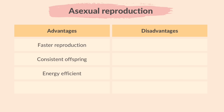Energy efficient — asexual reproduction requires less energy since only one parent is needed. Organisms do not need to waste energy searching for mates or producing gametes, which is advantageous for organisms that live in habitats where finding a mate is difficult. In the case of crops, there is no need for pollination. Asexual reproduction eliminates the need for pollination, which can be beneficial in environments where pollinators are scarce.